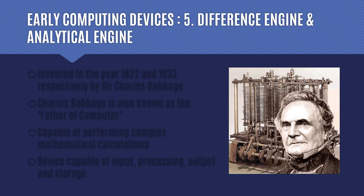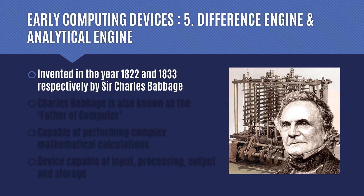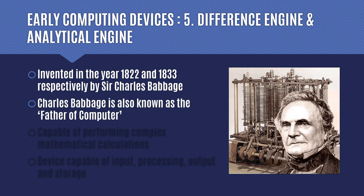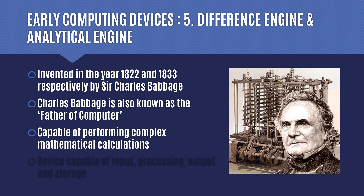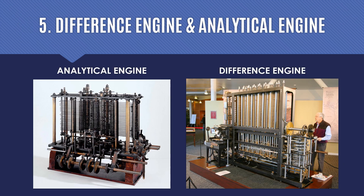The next two devices were the Difference Engine and the Analytical Engine, developed by Charles Babbage in the years 1822 and 1833 respectively. Charles Babbage is also known as the father of the computer because his engine was capable of taking inputs, processing data, delivering output, and also storing data — all four functions that you carry out in the modern day computer. You can see pictures of both engines, including a real one-to-one scale model of the Difference Engine placed in a museum in England.